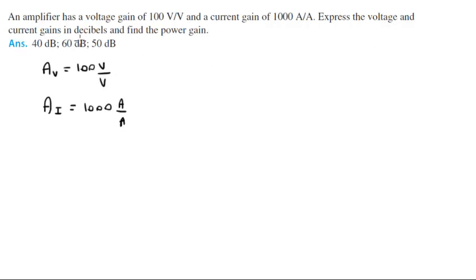Find the voltage and current gains in decibels and find the power gain. So the voltage gain in dB is given by 20 log of the absolute value of Av, which comes out to be 40 dB.